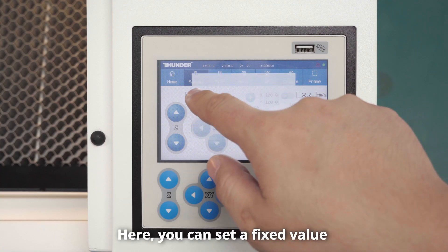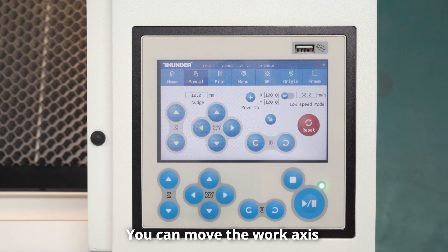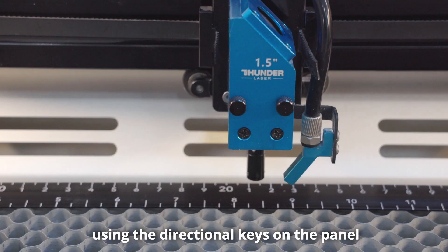Here you can set a fixed value to make the XYZ axis move at a fixed step length. You can move the work axis using the directional keys on the panel.